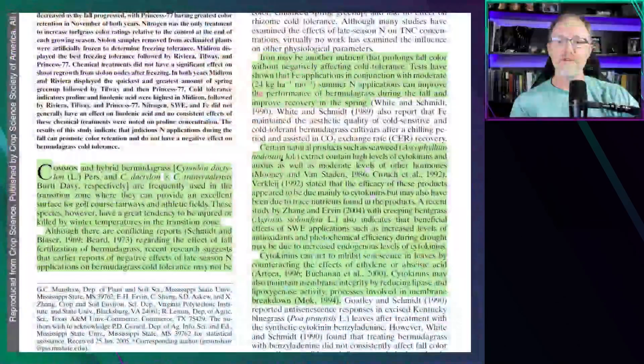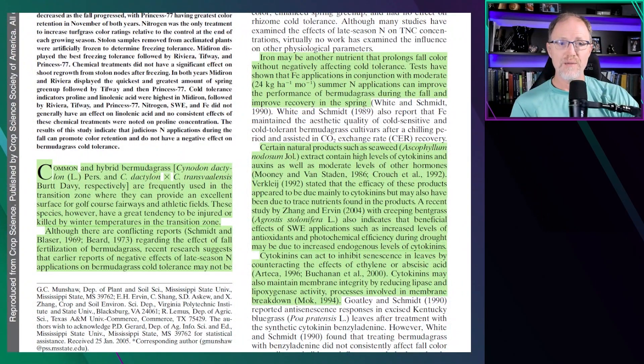Basically, the authors do the introduction by explaining that Bermudagrass, when it's going into dormancy, can have issues with cold tolerance, changes in color, and the application of nitrogen and iron historically has resulted in some benefit.